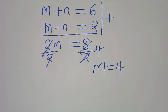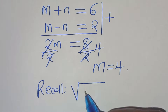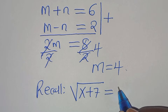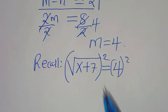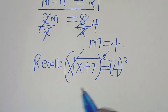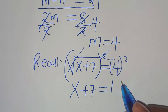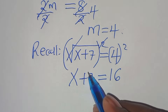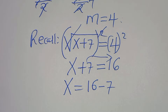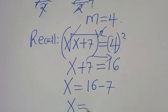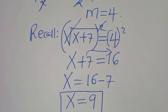Recalling that the square root of x plus 7 equals m, which is 4, we square both sides to eliminate the square root: x plus 7 equals 16. Taking 7 to the right-hand side: x equals 16 minus 7, which equals 9. So the value of x equals 9 by applying Method 2. Let's proceed to Method 3.